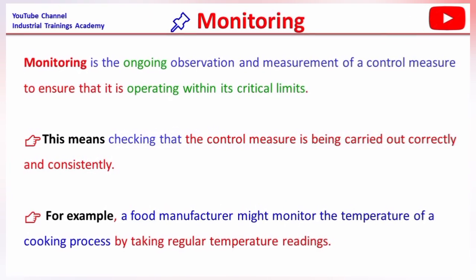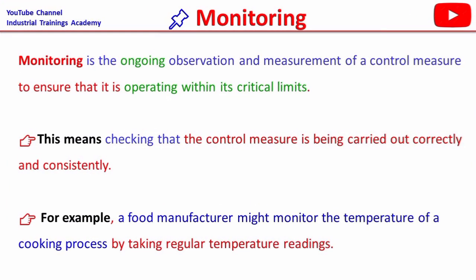Monitoring ensures that the control measure is operating within its critical limits — meaning it is being carried out correctly and consistently. For example, a food manufacturer might monitor the temperature of a cooking process by taking regular temperature readings.